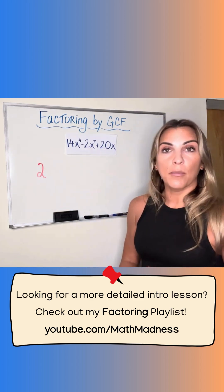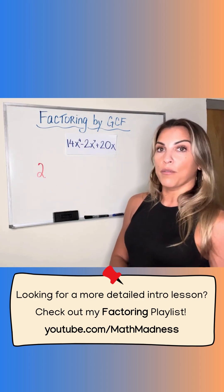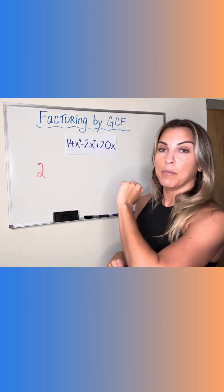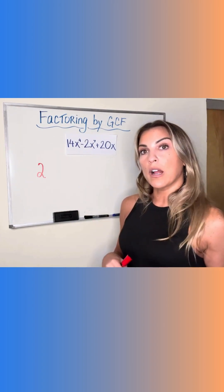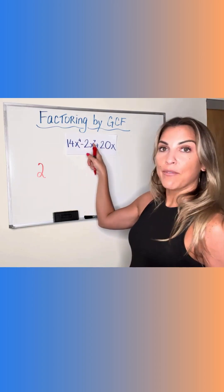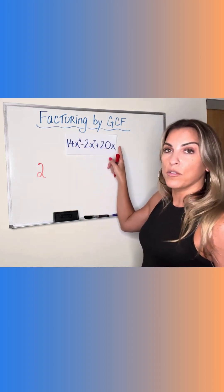Now let's look at the variables and see if any variable can be part of our GCF. Every term has an x, so that means it can be part of it. And remember the shortcut that I said was just take the smallest exponent. So we have x to the fourth, we have x to the seventh, and we have x to the invisible one.